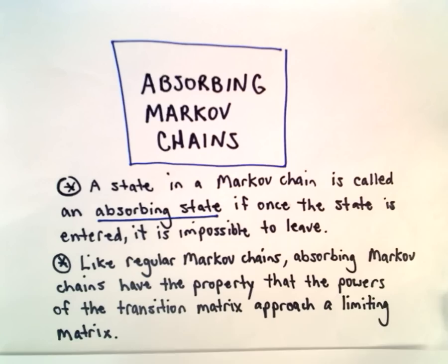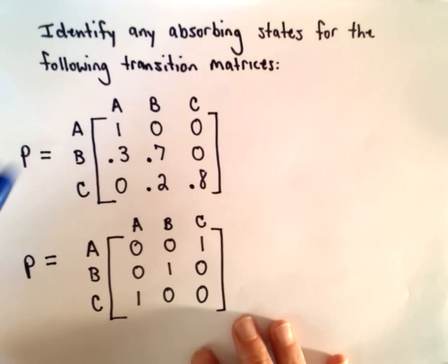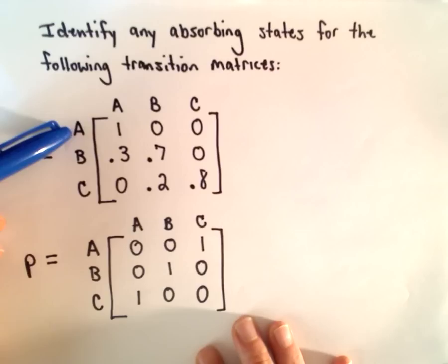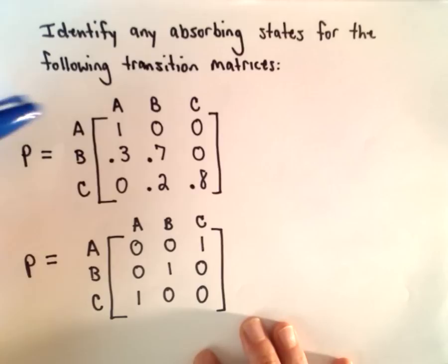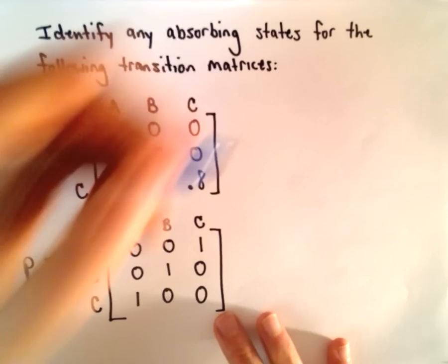Let's go back to this idea of an absorbing state. We're going to identify any absorbing states for these two transition matrices. In the first one, we have states A, B, C. Notice if you start off in state A, according to this transition matrix, there's a 100% probability that you're going to stay in state A. Once you're in A, you're stuck in A — therefore A is an absorbing state.